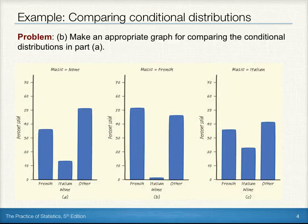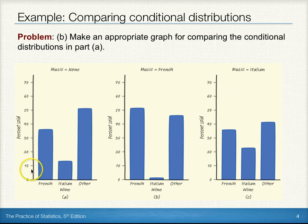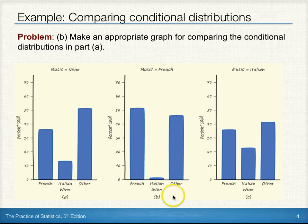To make an appropriate bar graph for comparing the conditional distributions, we'll want to plot three different bar graphs, one for each type of music. Our vertical scale is the percent sold of each type of entree. Horizontally we have our categories: French music, Italian music, and other. We can see three bar graphs comparing those conditional distributions based on the proportions we previously calculated.